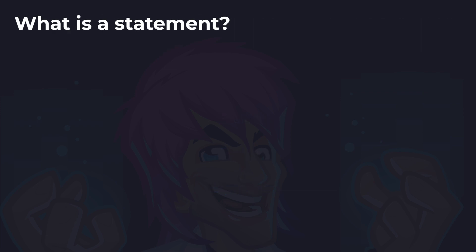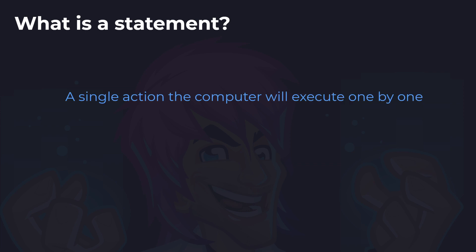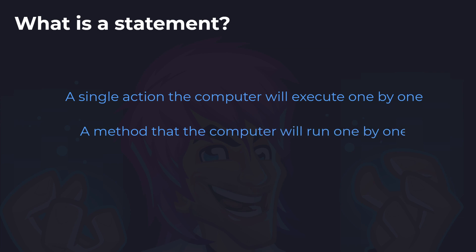Next up: what is a statement? Is it a single action the computer will execute one by one, or is it a method that the computer will run one by one? And the answer is a single action the computer will execute one by one. A method is a group of statements that can be executed — it isn't a single action itself.